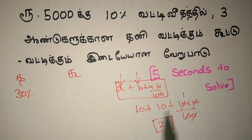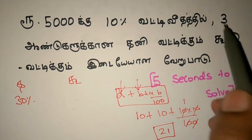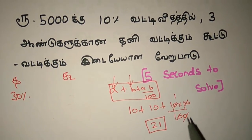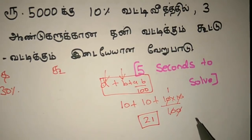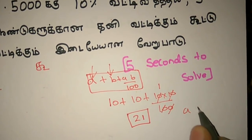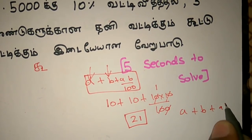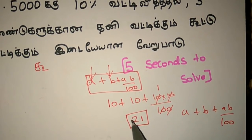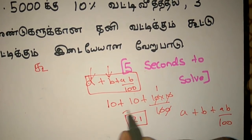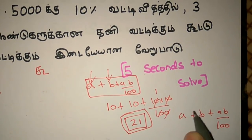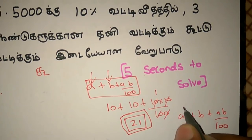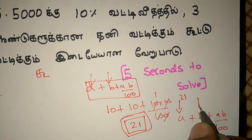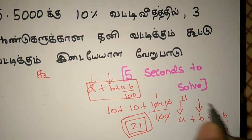So you have 3 persons. Now there are a plus b plus ab by 100. So you have 2 persons doing the same thing — 2 persons are using a. Let's add b, then we add 10.